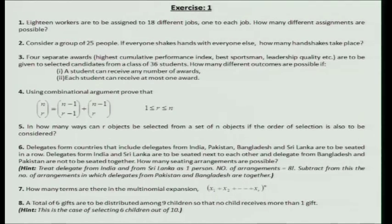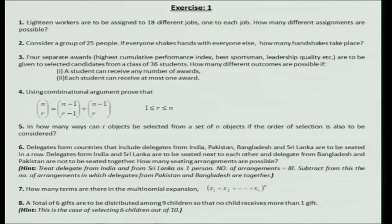Question 3: 4 separate awards are to be given to students selected from a class of 36 students. In part 1, a student can receive any number of awards — you have to count accordingly. In part 2, each student can receive at most 1 award, so either a student receives an award or does not.